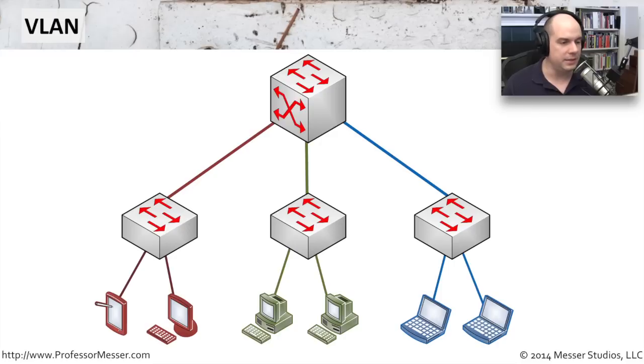The way that most people will do this is they might have single switches, and that entire work group switch may contain an entire VLAN. So you might have the red VLAN, the green VLAN, and the blue VLAN all on a single switch.